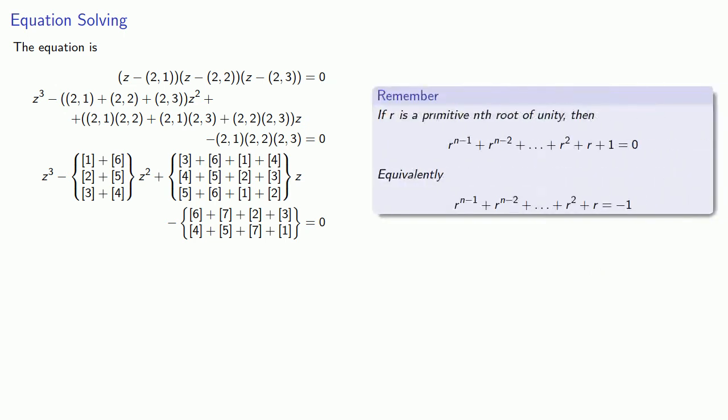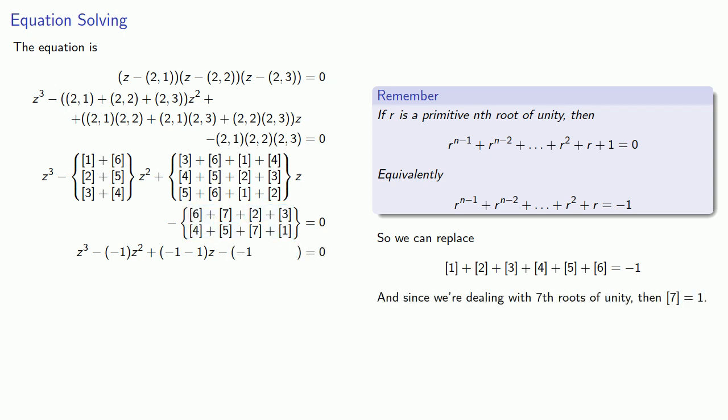And again, remember that the sum of all the powers is negative 1, and so we can isolate those sets that are sums of all the powers. Also remember that these are the 7th roots of unity, so the bracket 7 is just equal to 1. And since this is a cubic equation, we can solve it. Or can we?